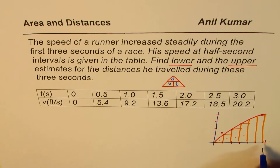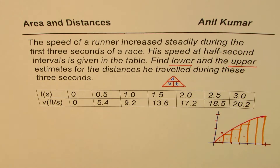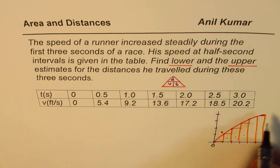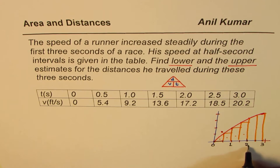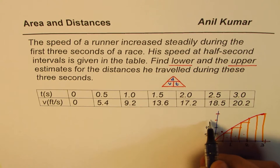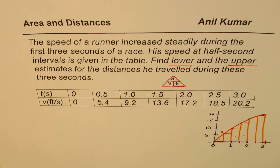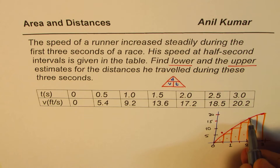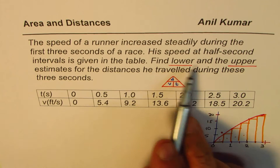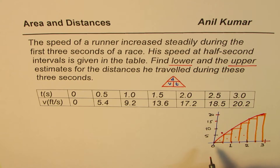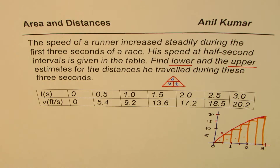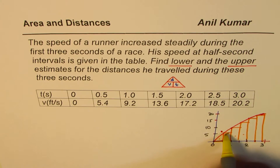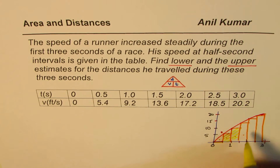So we have 3 seconds total, marked at 1, 2, and 3. The velocity axis shows 5, 10, 15, and 20 approximately. When using the lower estimate, we use the left endpoint of each rectangle to find the area under this curve. The area of the first rectangle is 0, the second gets the next velocity value, and so on.